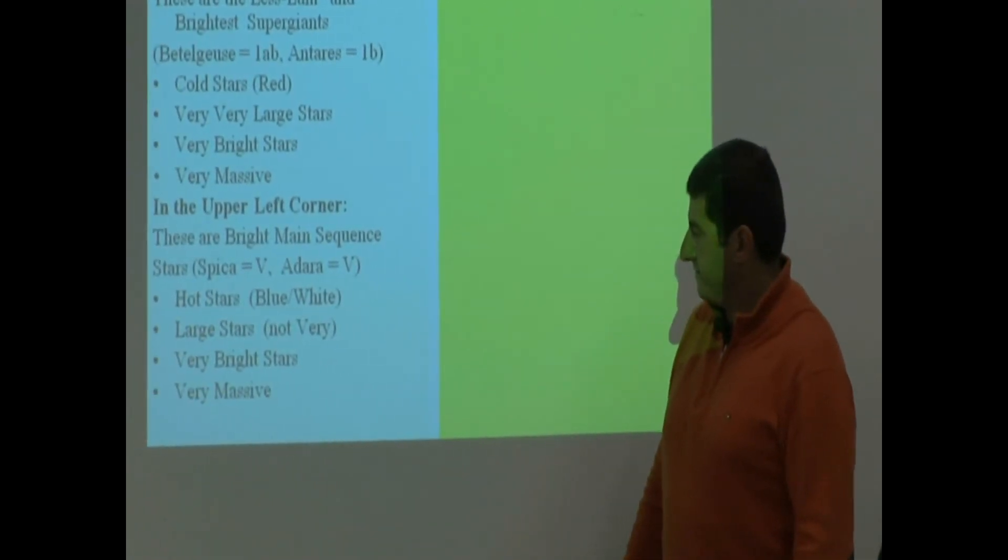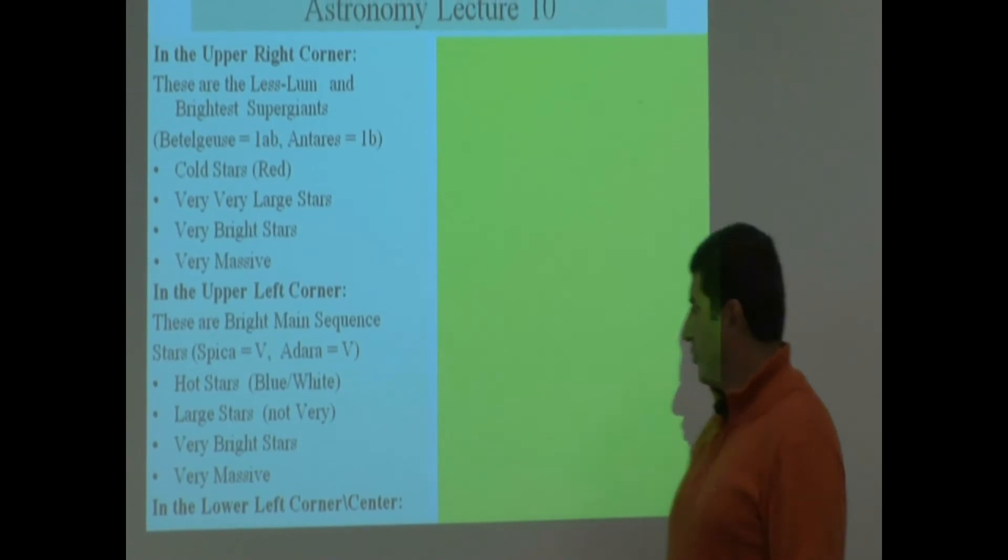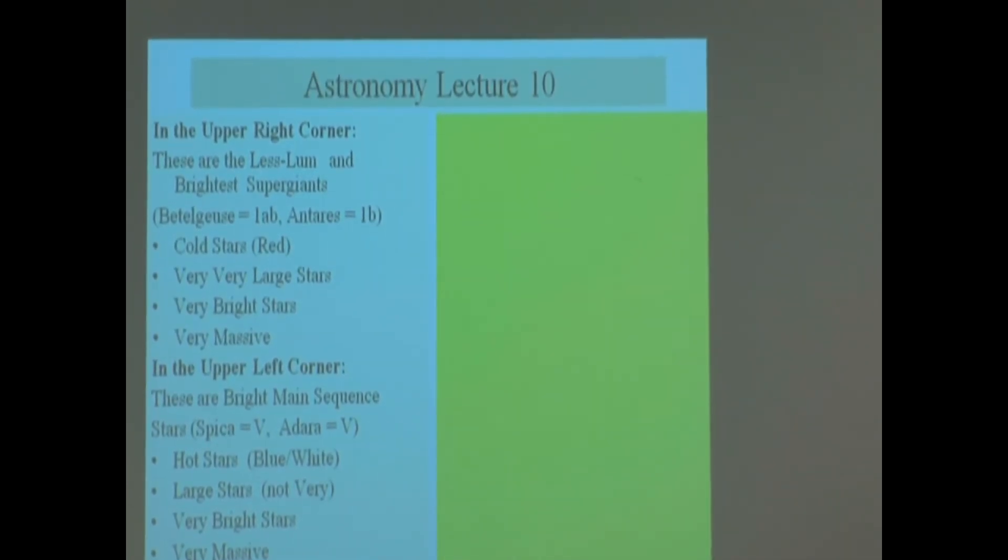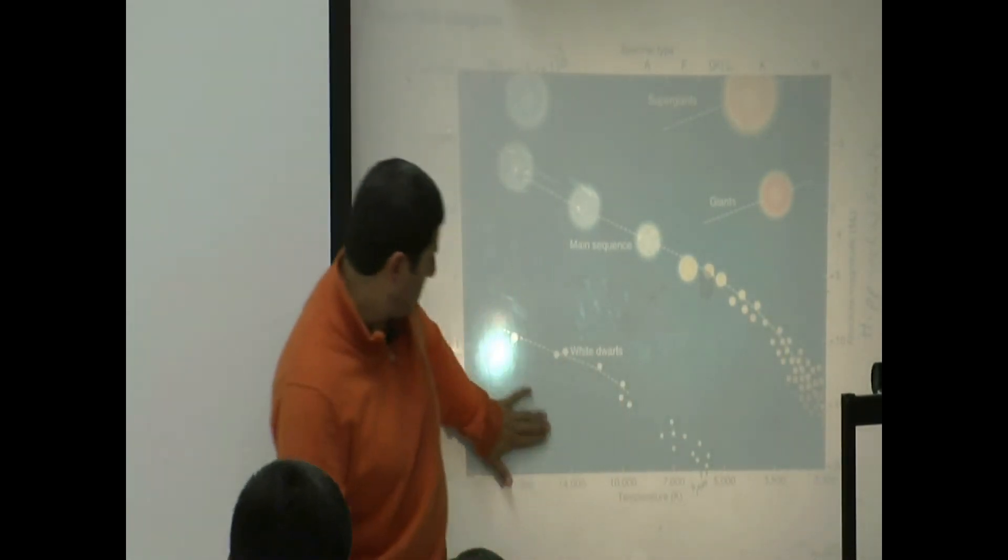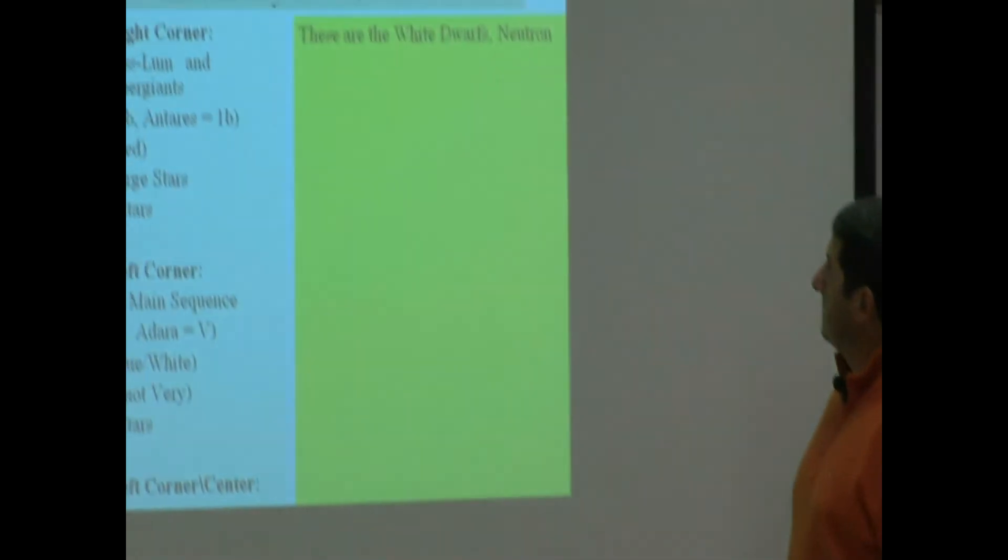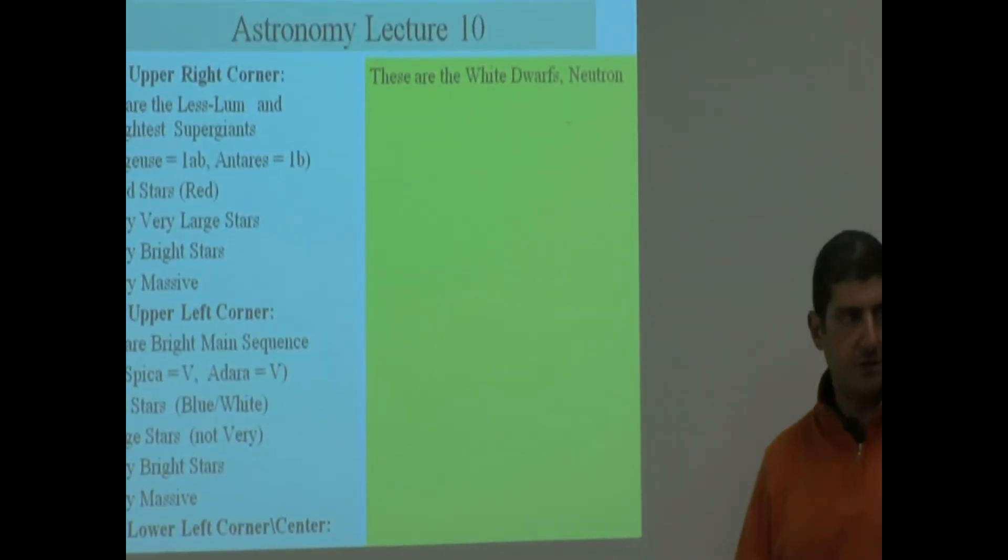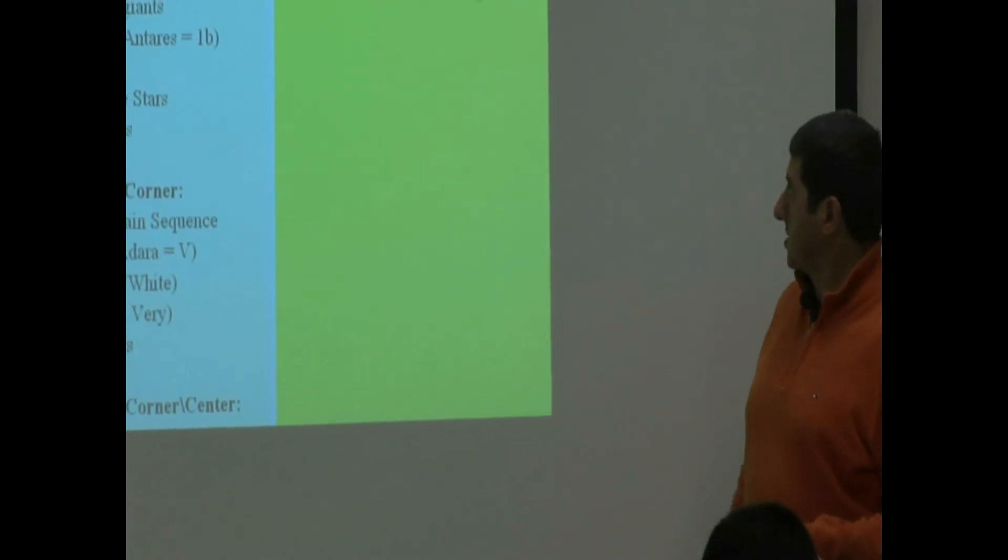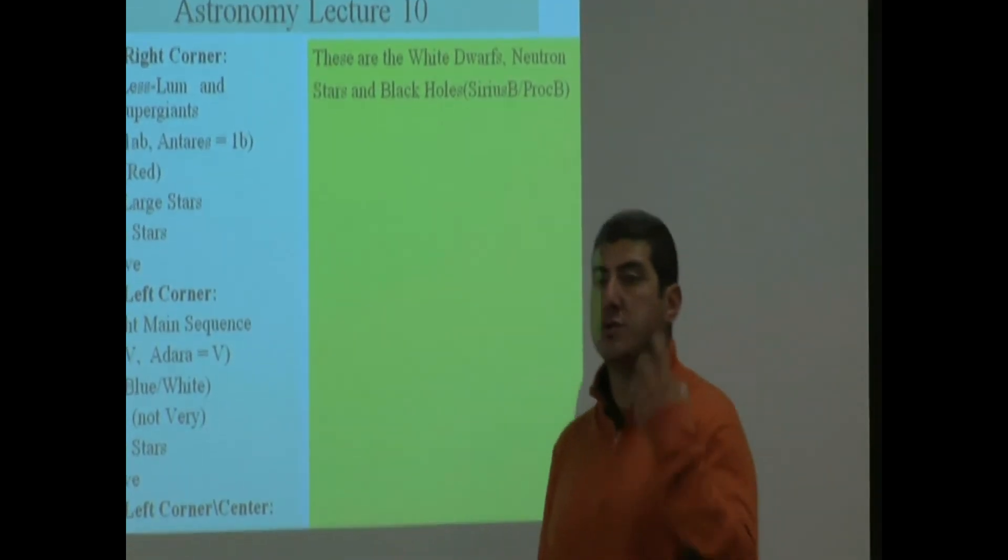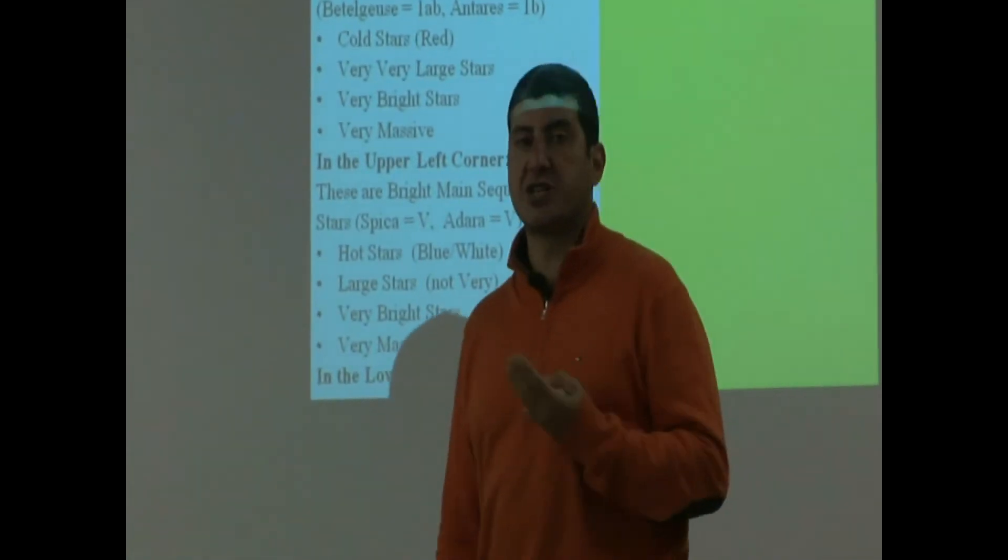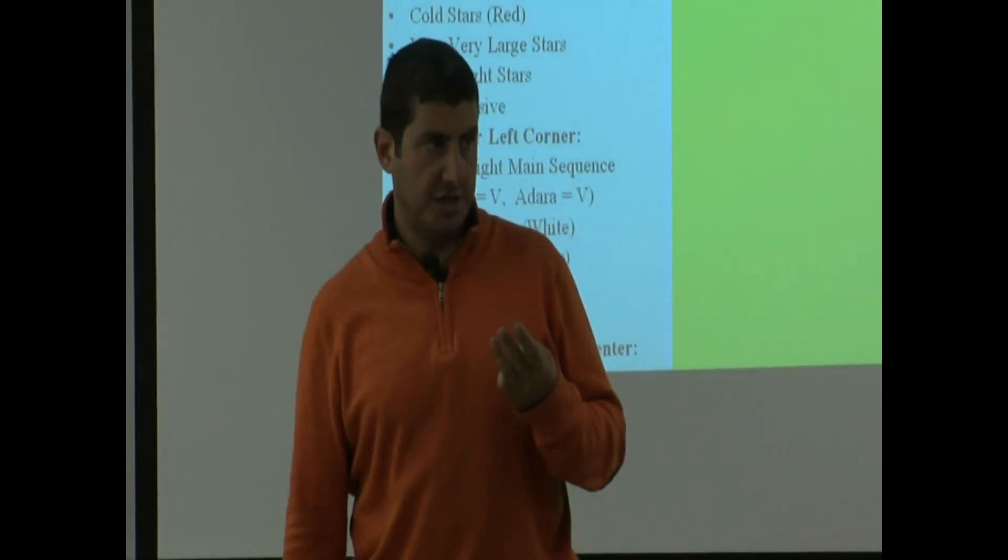In the lower left corner or the center, that means lower left anywhere here, anywhere here, or anywhere in the center, you see these guys here. And then these are the white dwarfs. Neutron stars, black holes. If we were to, these are going to be three kinds of stars that we're going to learn about in the next lecture. When a star is dead, it can either end up as a white dwarf star, it can end up as a neutron star, or it can end up as a black hole.